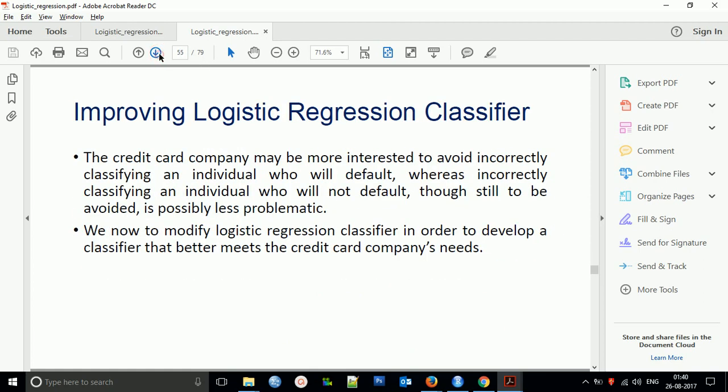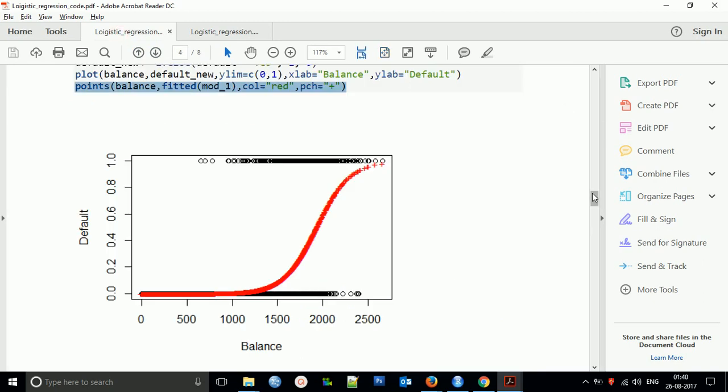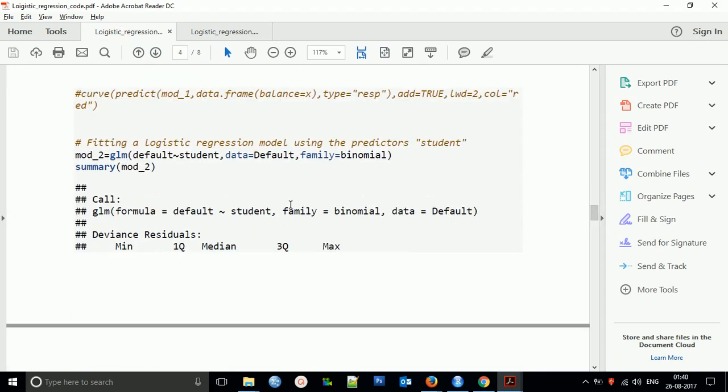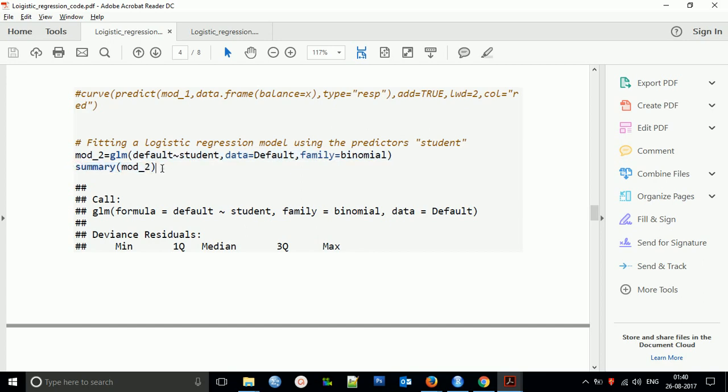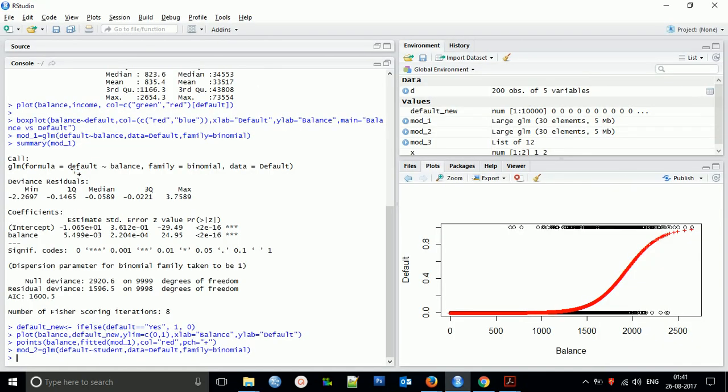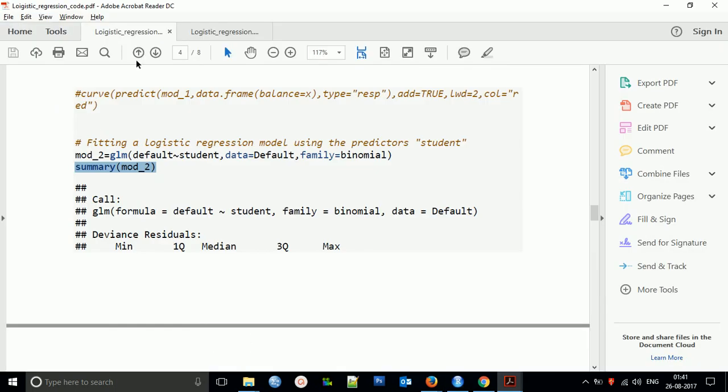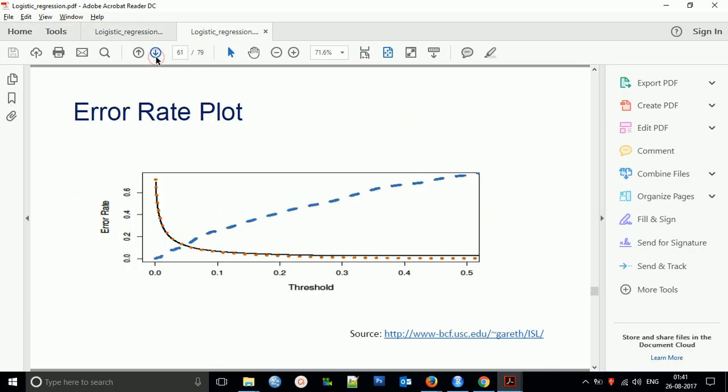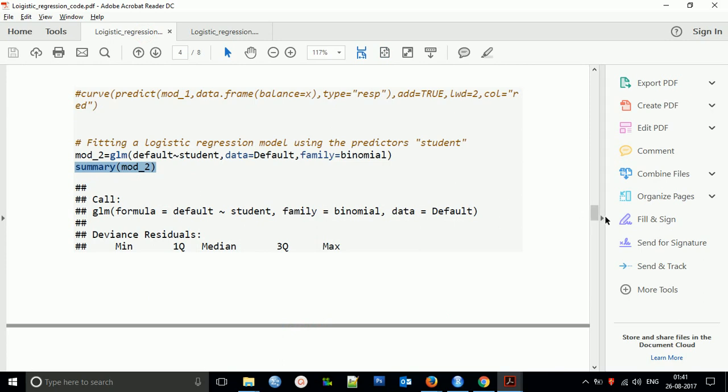Coming to a new model, we can fit a logistic regression model using the predictor student. I'll pass the argument default equals student and data equals default. We've created one more model with these new values.